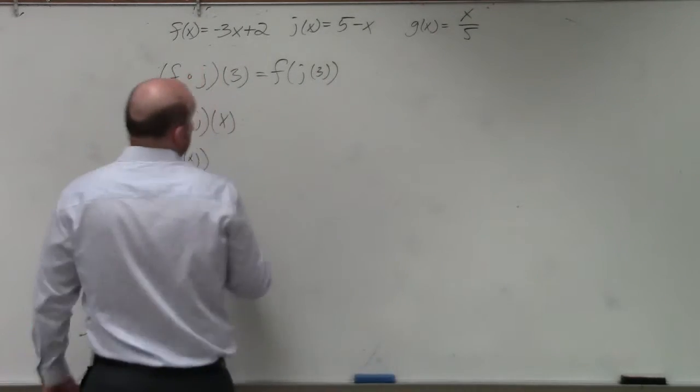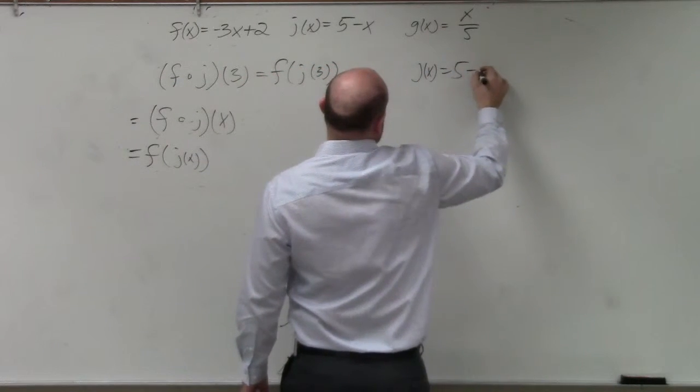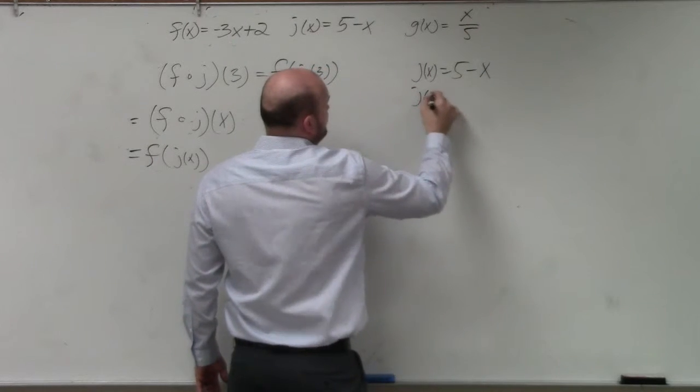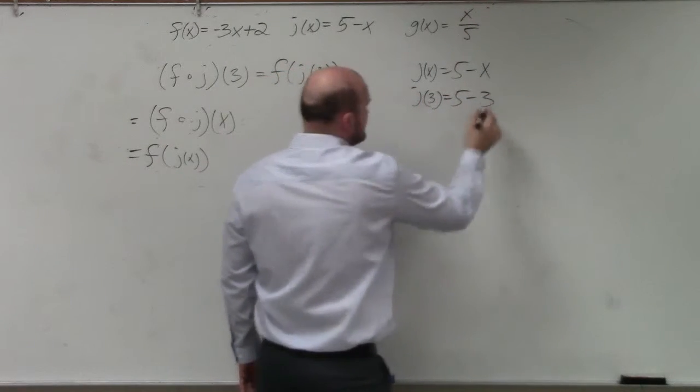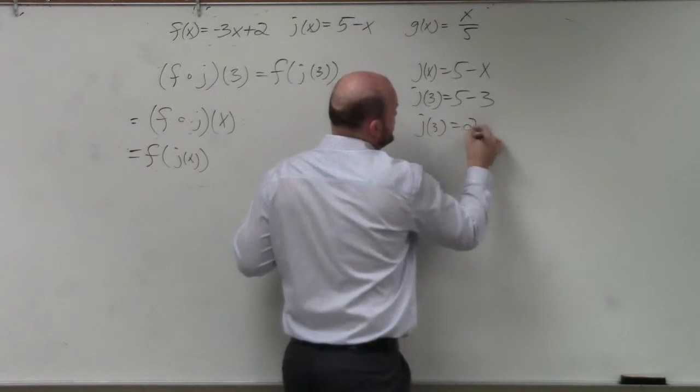Sure, of course we can. So if j of x is equal to 5 minus x, j of 3 is equal to 5 minus 3. Correct? So j of 3 is equal to 2.